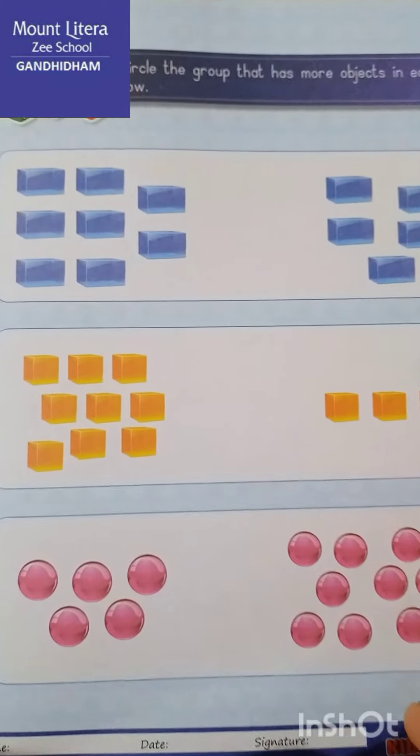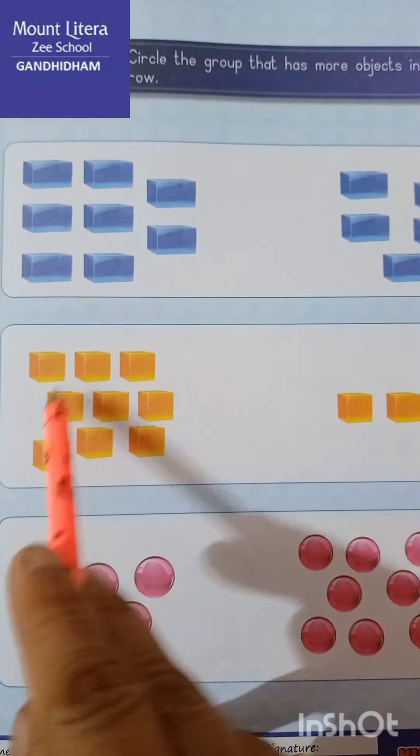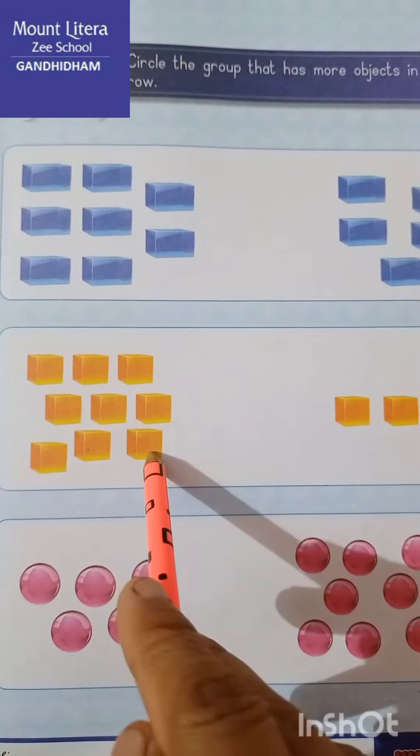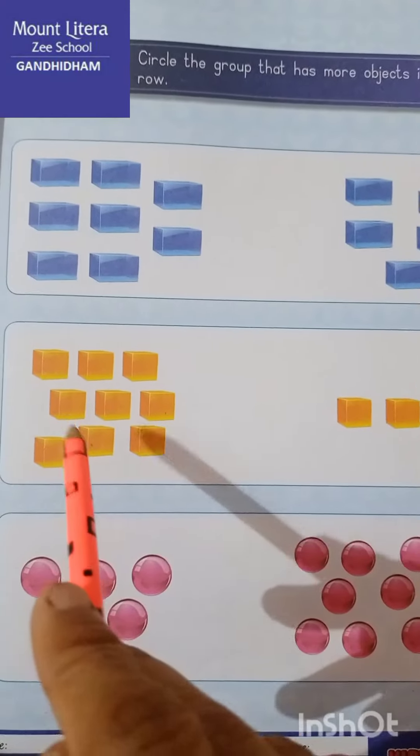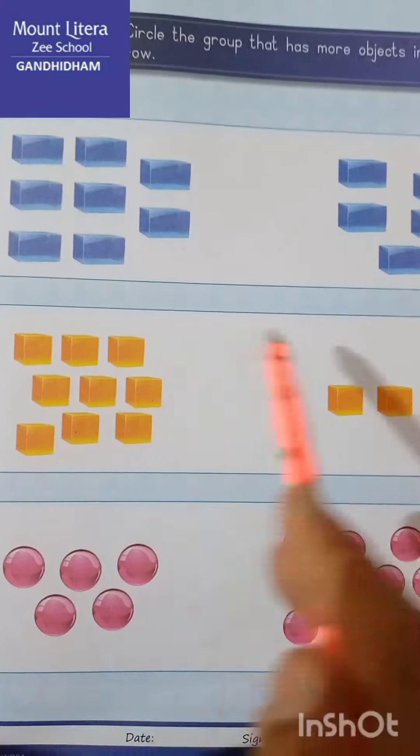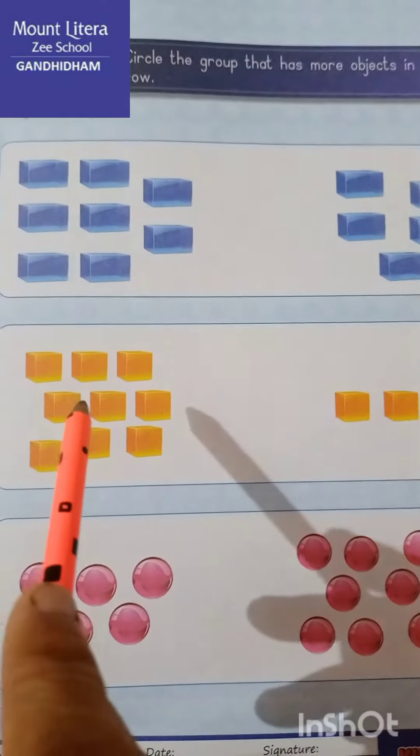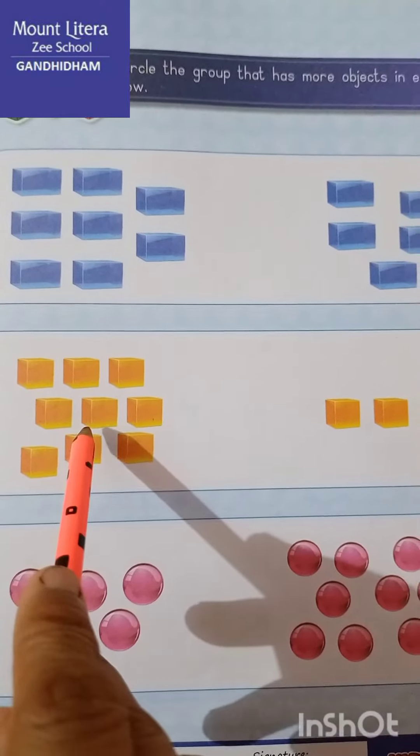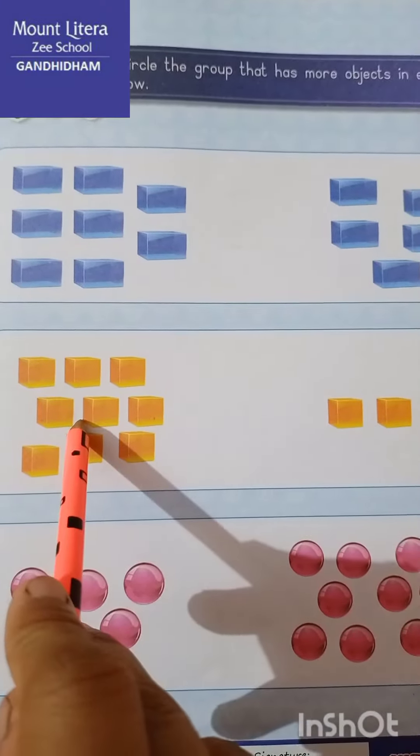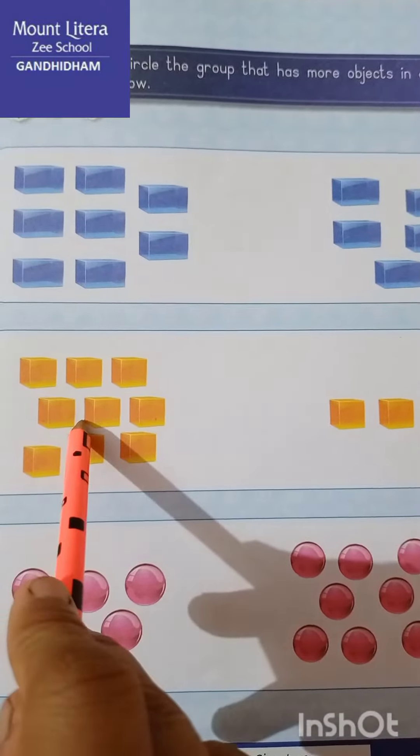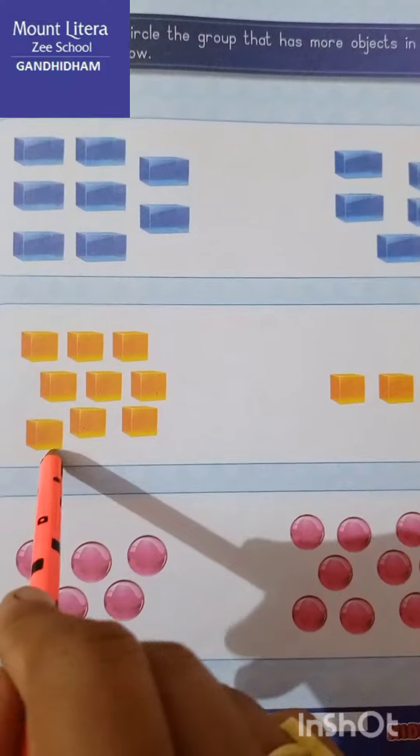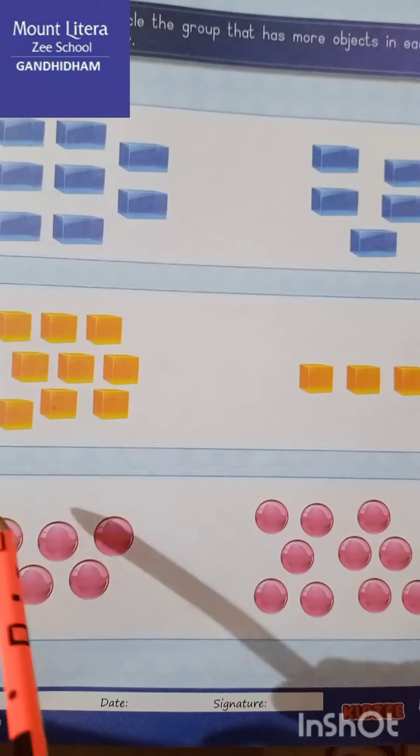1, 2, 3... 1, 2, 3, 4, 5, 6, 7, 8, 9, oh. So this group has 9 objects and that group has only 3 objects. So this group is - sorry - this group has more objects. That means we have to circle on this group, okay. Last one is...